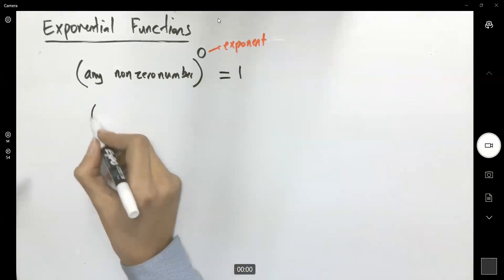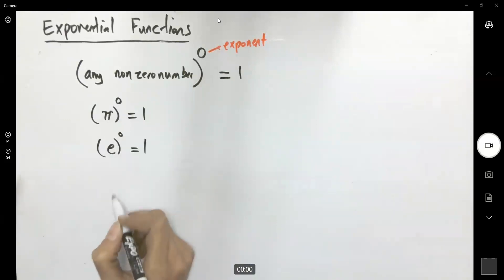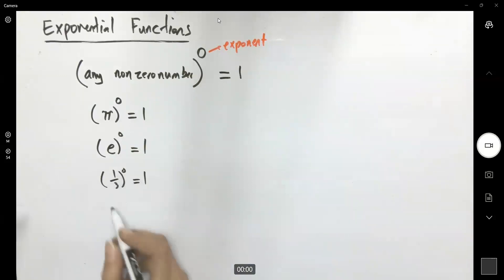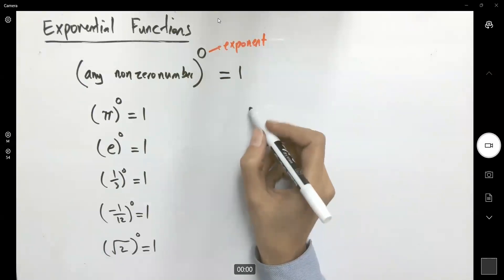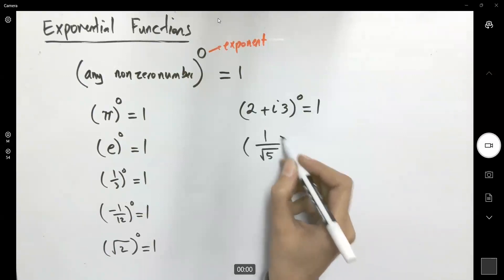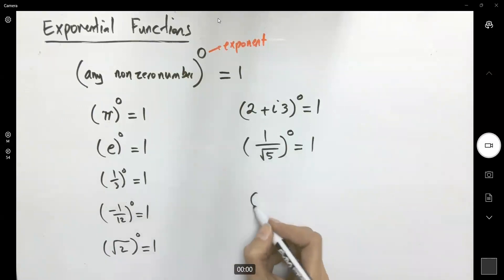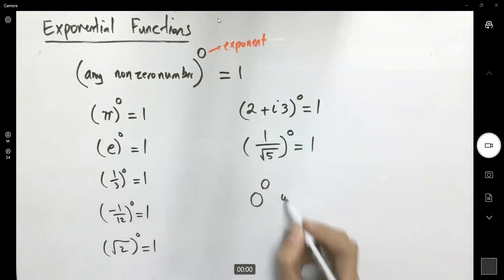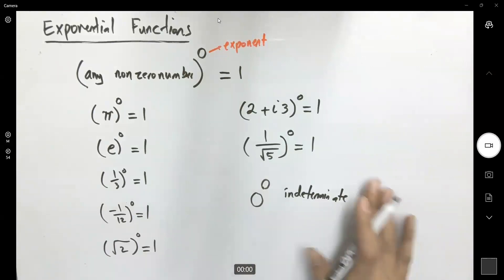For example: pi to the zeroth power is 1. The Napier number (e) to the zeroth power is 1. One-third to the zeroth power is 1. Negative 1 over 12 to the zeroth power is 1. Square root of 2 to the zeroth power is 1. Complex numbers to the zeroth power — for example, 2 plus 3i to the zeroth power — is 1. Any non-zero number raised to zero is 1. However, zero raised to zero is indeterminate, which you will deal with in calculus.